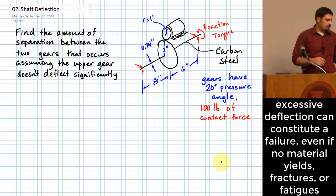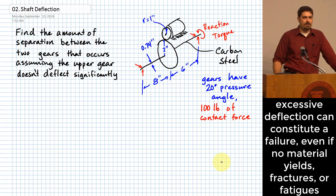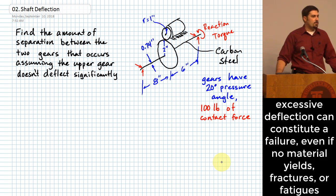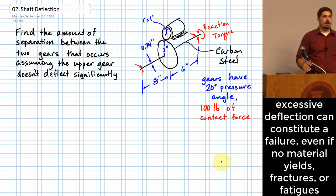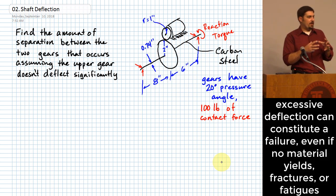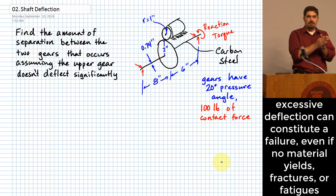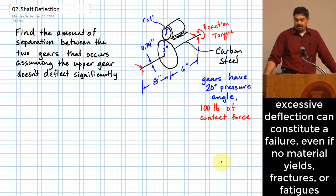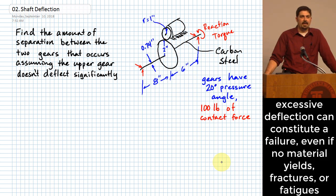An example I heard of was someone who installed a fan in a car, and the fan was not stiff enough. As the fan started to pull air, the airflow deflected a fan blade, and the blade actually made contact with the radiator of the car because the fan was under-designed and deflected too far - they had put it too close to the radiator. If something deflects too far, it can very easily get into a space it's not supposed to be.